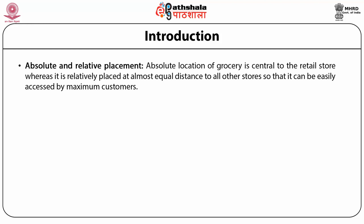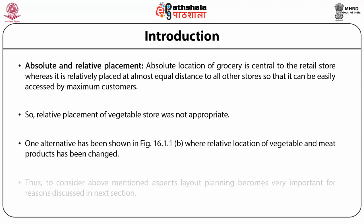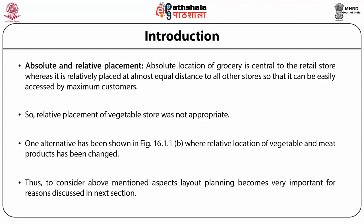It was found in this design that vegetarian customers had objections to the layout design, as the vegetable store was placed adjacent to the meat product store. So the relative placement of the vegetable store was not appropriate. One alternative has been shown in a figure where the relative location of vegetable and meat product has been changed. A firm must select only that alternative which has the highest economic value.